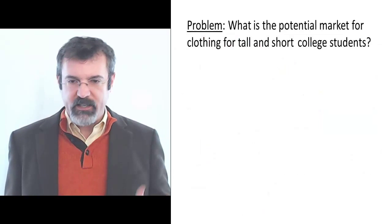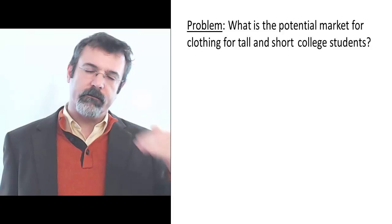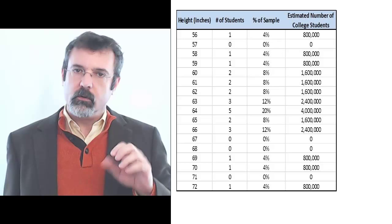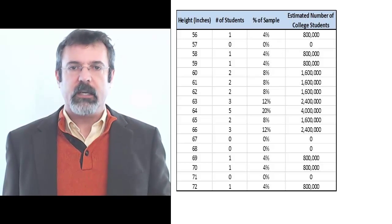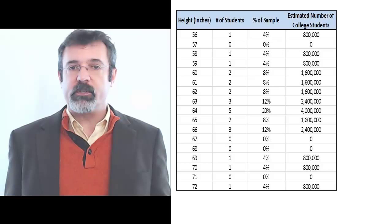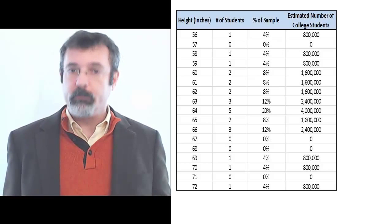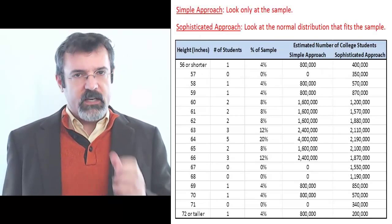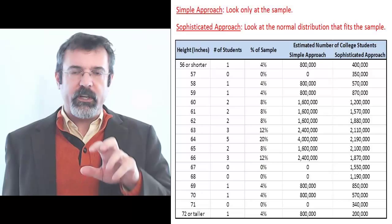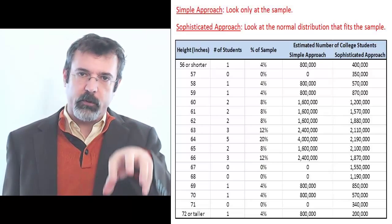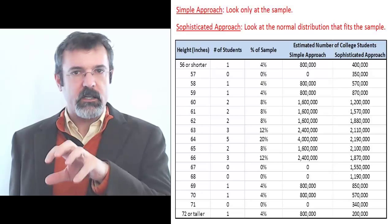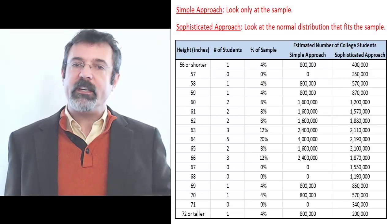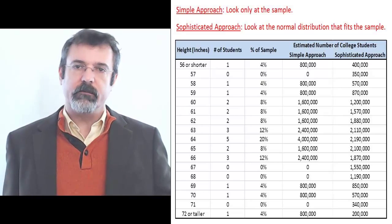The question we're answering is what percentage of students are of various heights, and we used two approaches. In the simple approach, we looked only at the sample: 4% of the students were 56 inches tall, so we estimated 4% of all college students are 56 inches tall. In the more sophisticated approach, we combine what we know about the sample with what we understand about the normal distribution. When we combine these two pieces of information, we get a more accurate estimate of the number of students of various heights.